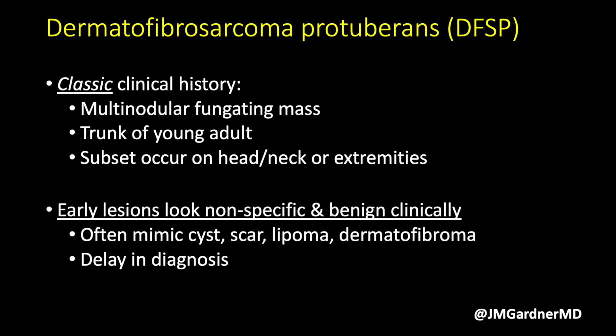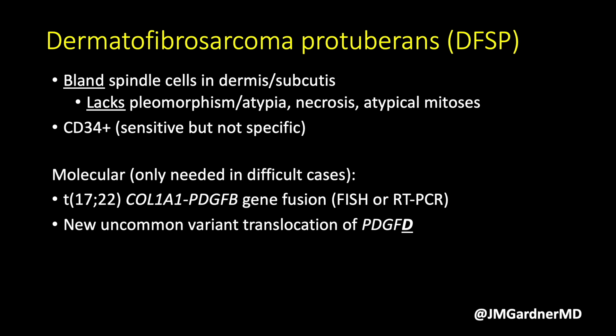I've seen many examples on the scalp. If you let them grow for years they will become multi-nodular and fungating, but when they start out they often have a very benign, non-specific clinical appearance. I've met hundreds of patients and seen many cases where DFSP was clinically thought to be a cyst, scar, lipoma, keloid, or dermatofibroma. This frequently results in delay in diagnosis and delay in biopsy. A very common scenario is the surgeon going to shell out what they think is a cyst, only to find post-operatively it clearly wasn't cystic.